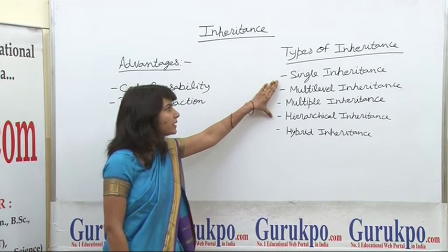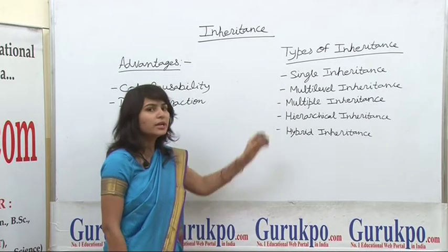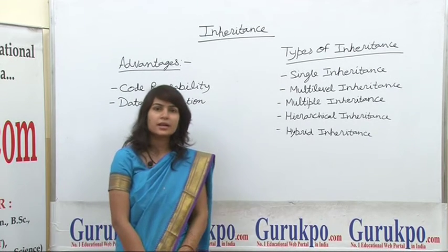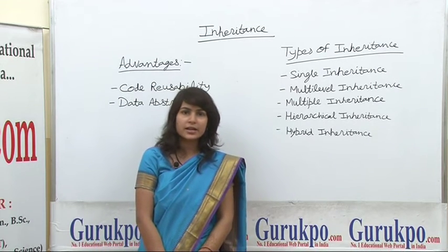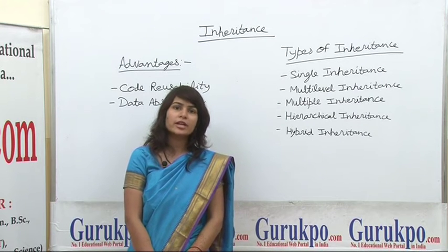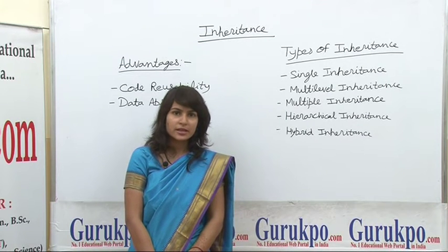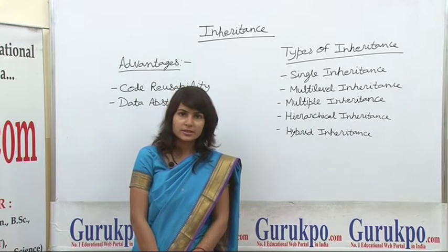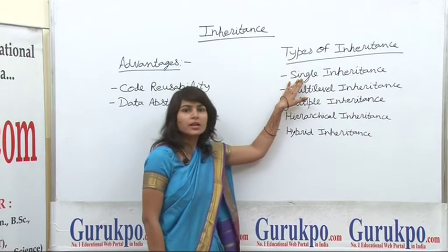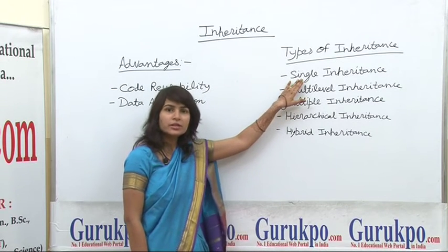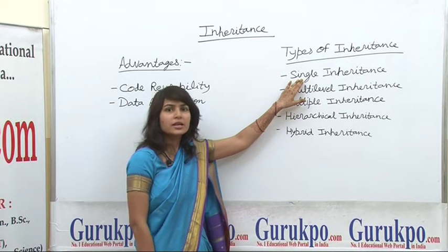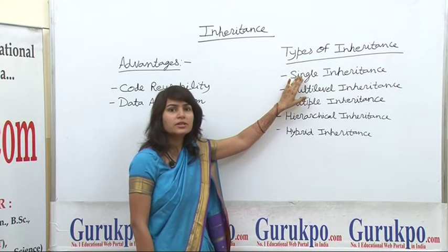The first is single inheritance. In single inheritance there is only one base class and one derived class which is derived from it. The types include multilevel inheritance, multiple inheritance, hierarchical inheritance, and hybrid inheritance, which provide different types of features in C++.